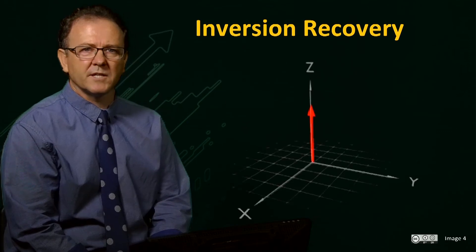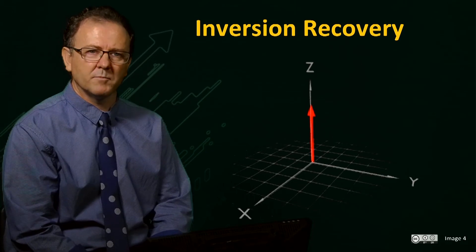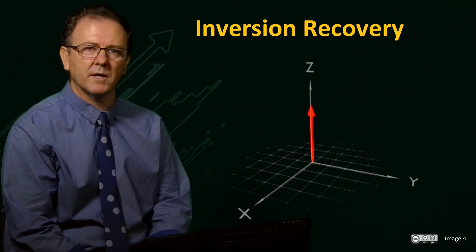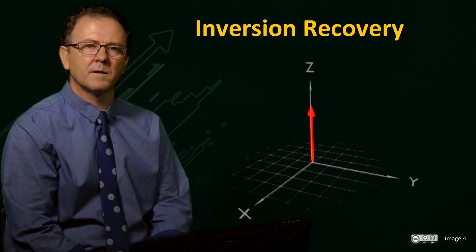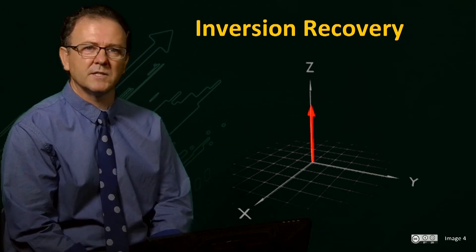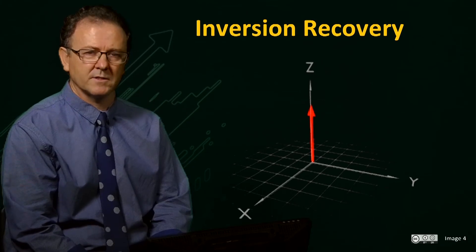We saw in an earlier section that a 180 degree pulse applied at equilibrium causes the Z magnetization to rotate down to the minus Z axis. This is an inversion pulse. So a 180 degree pulse can be used to either refocus transverse magnetization or invert longitudinal magnetization.